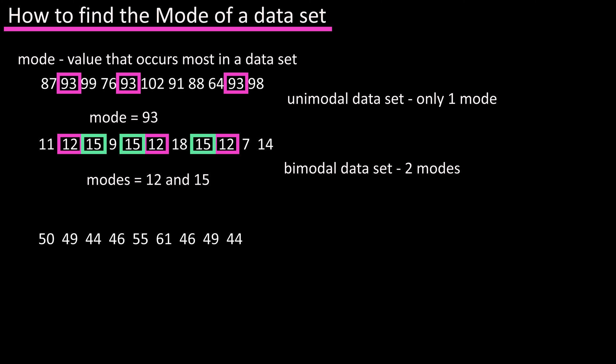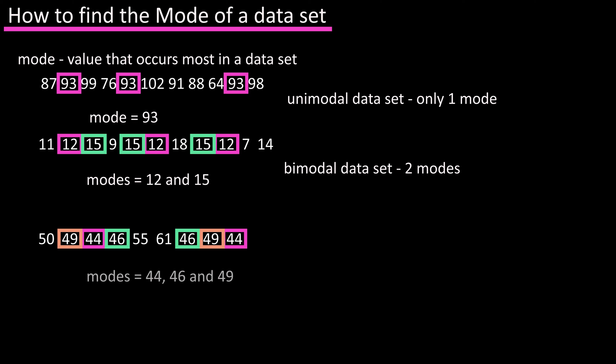In this data set, 44, 46, and 49 all occur twice. So this data set is multimodal.